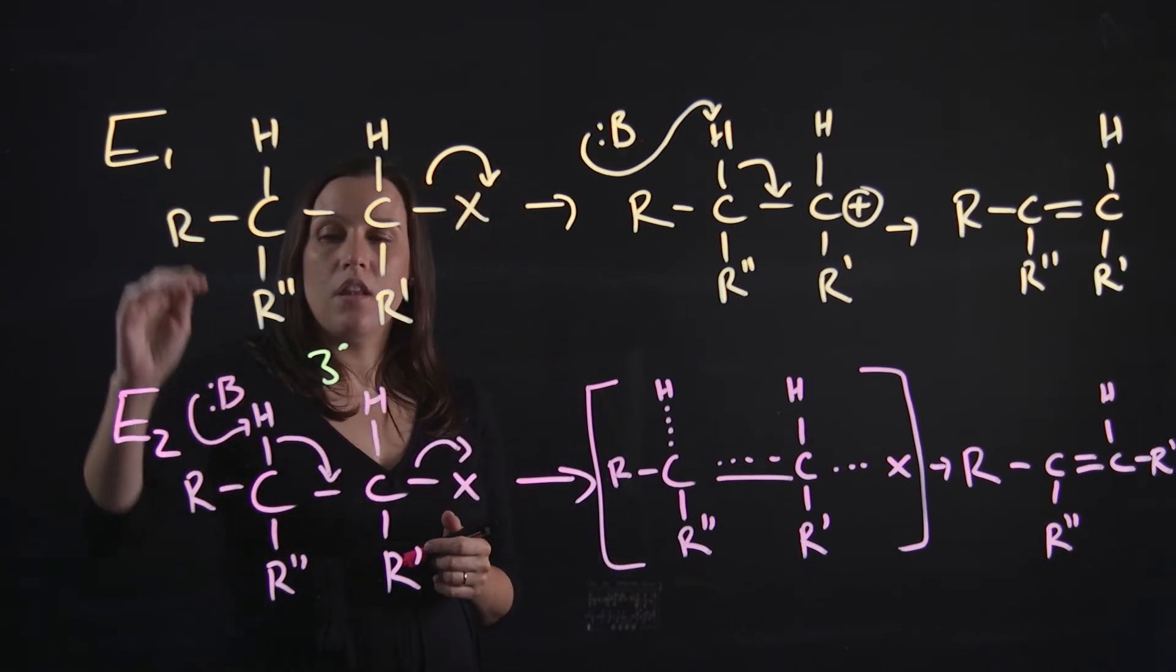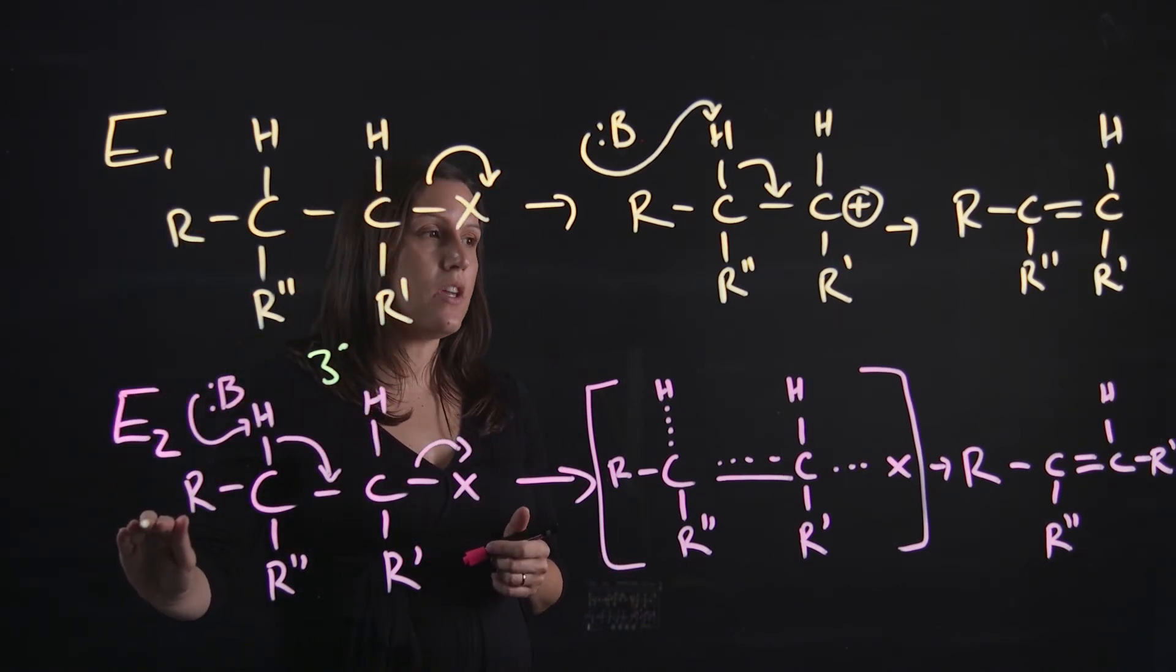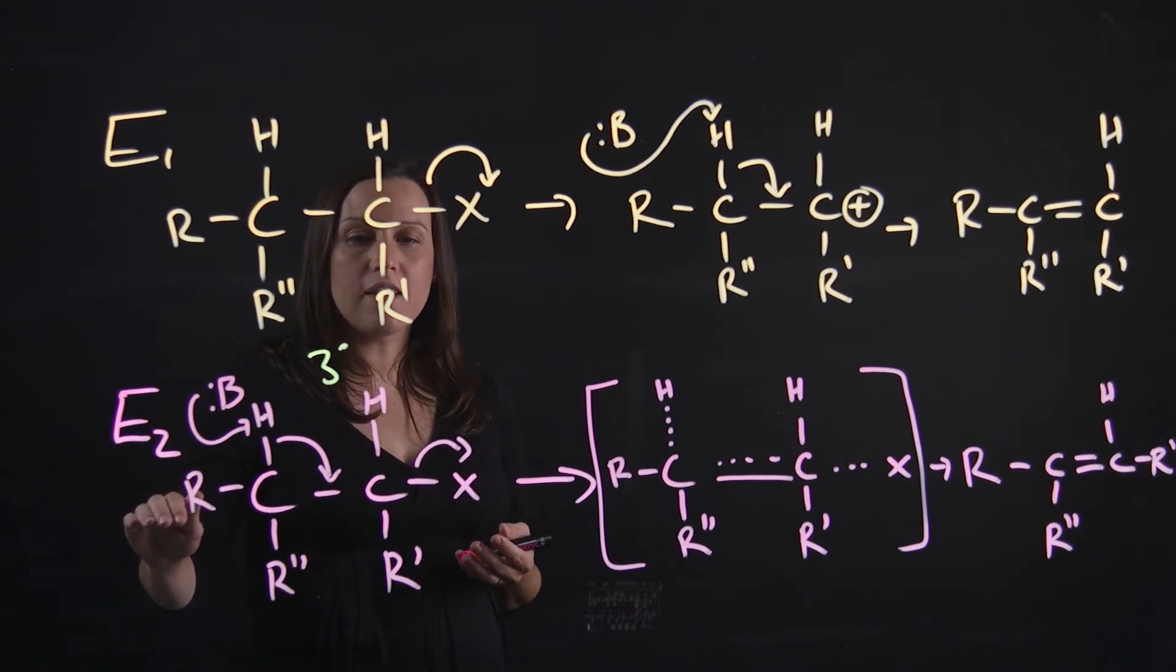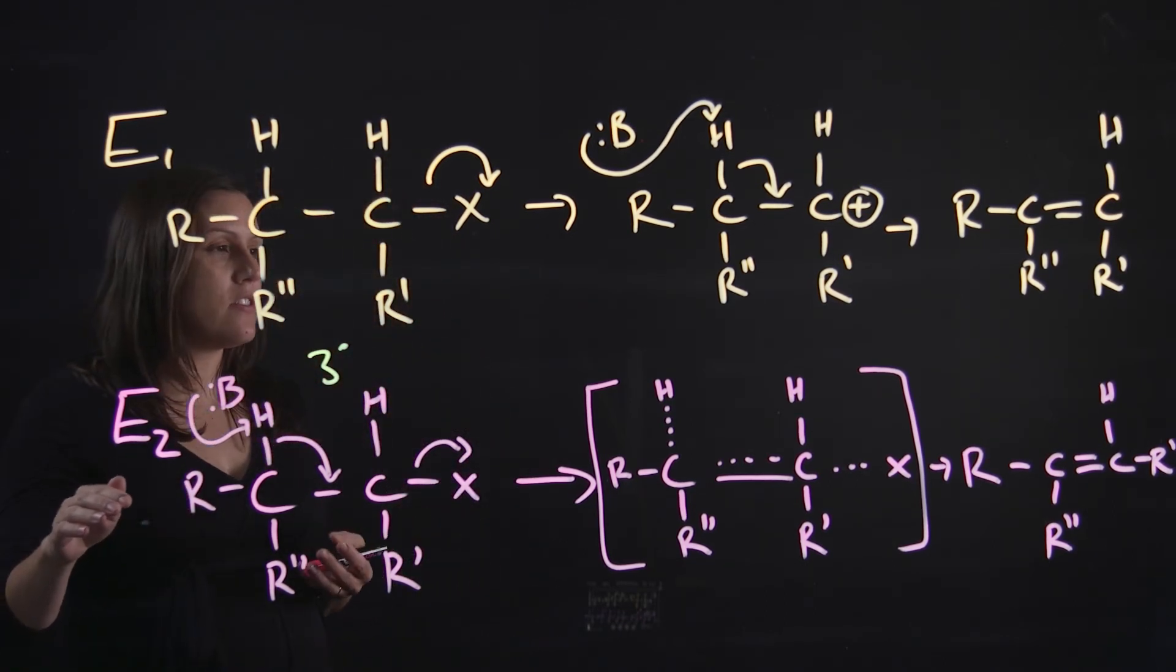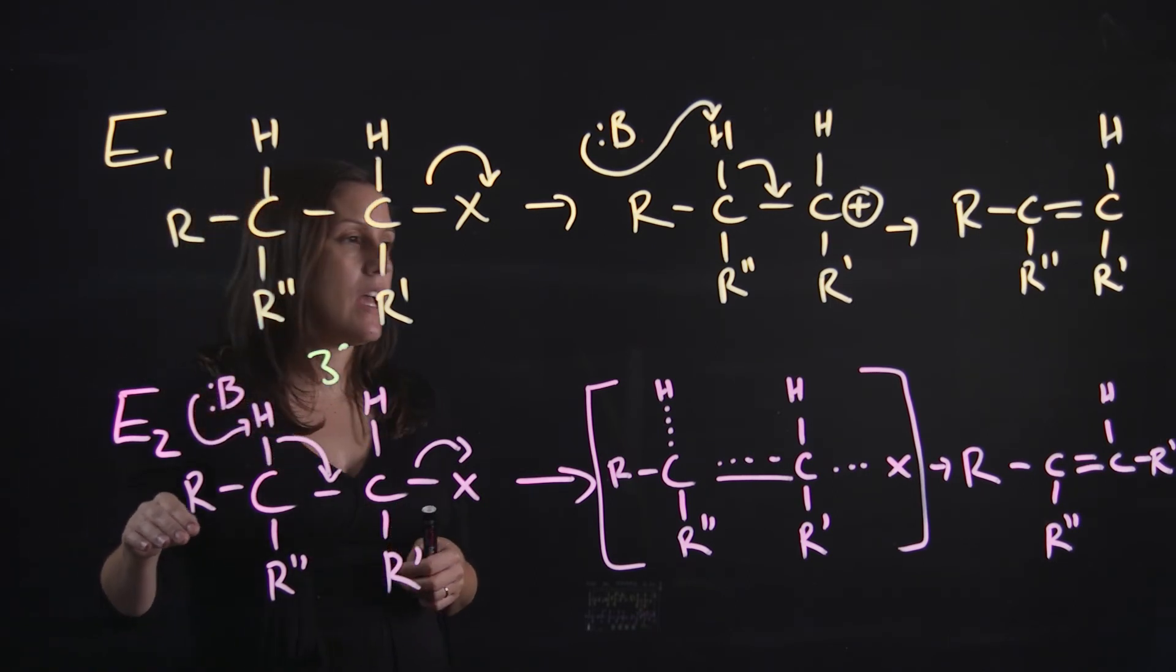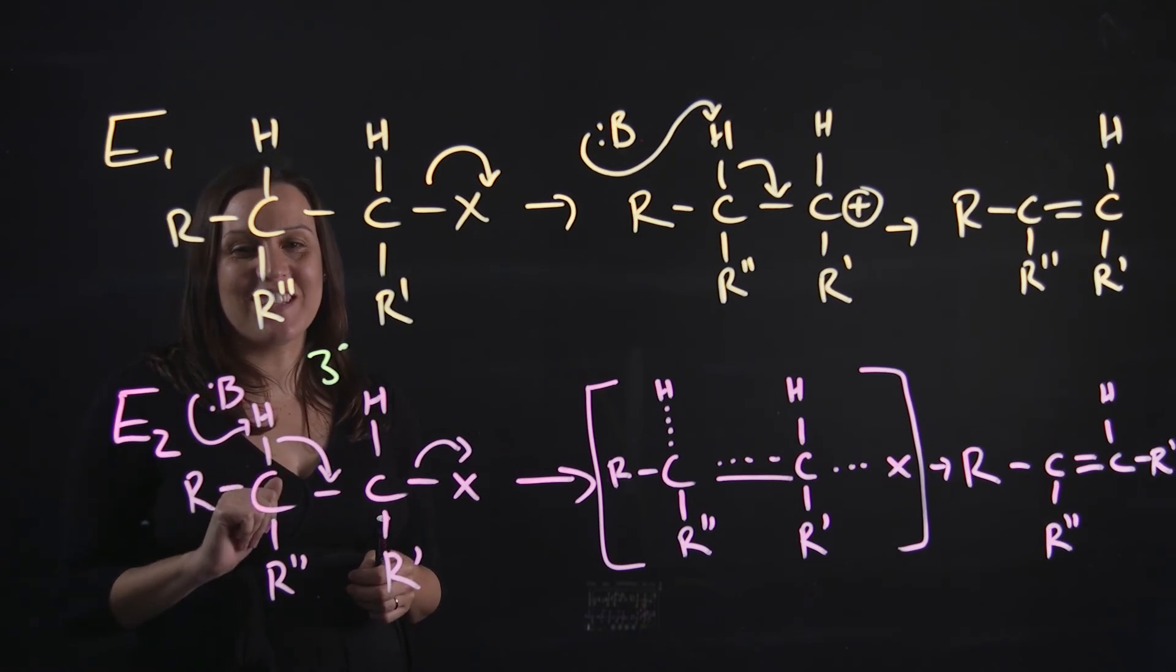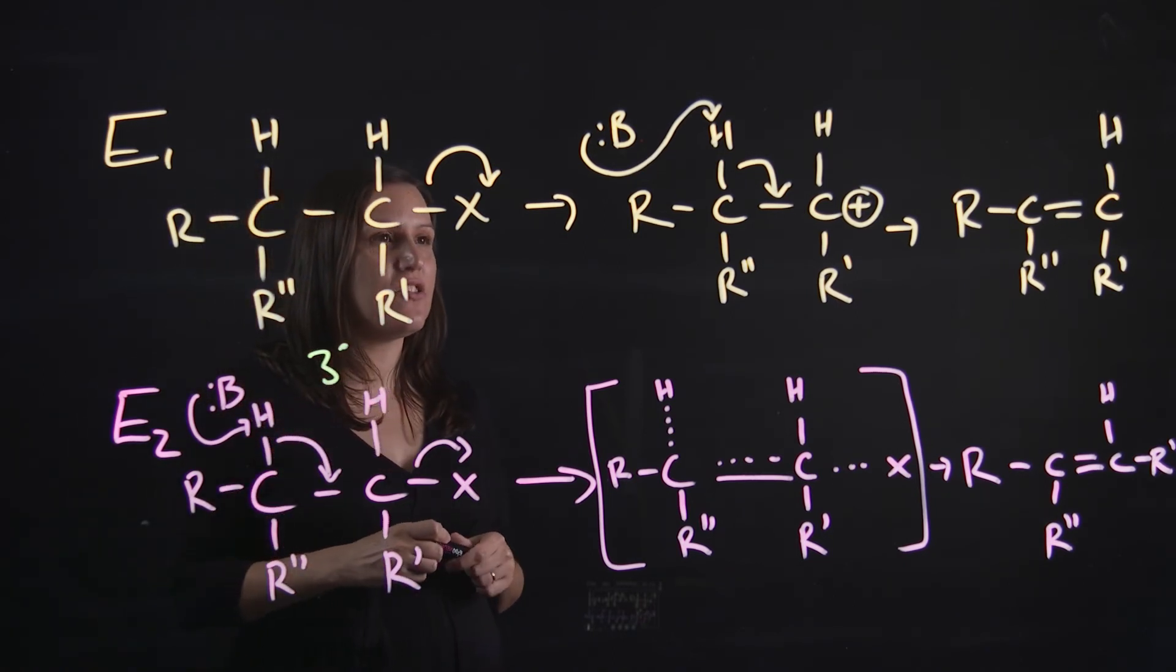So E2, strong bulky base. Strong bulky bases are your alkoxides: methoxide, ethoxide, tert-butoxide, and LDA. And a protic solvent with this one. So that's the two types.